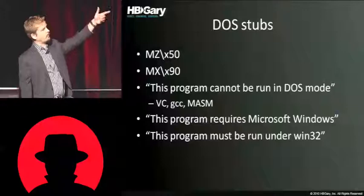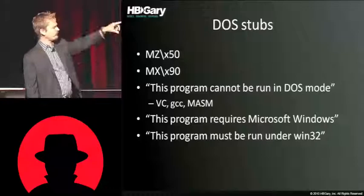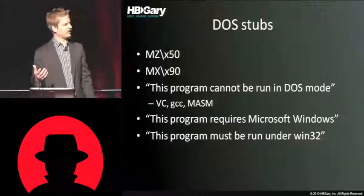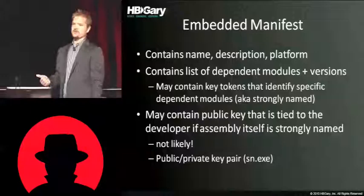DOS stubs: there are different ones. That should say 'MZ' not 'MX,' sorry. MZ50 versus MZ90 — what kind of DOS stub the linker puts there depends on which linker is being used. There's another header: I've never seen a program that has it, but sometimes you might see 'This program requires Microsoft Windows.' If anyone knows what situation would create that, I'd like to know. Modern things developed in .NET will have embedded manifests, and manifests contain all kinds of interesting data about what was compiled.